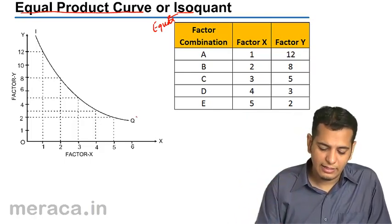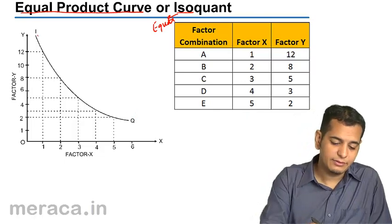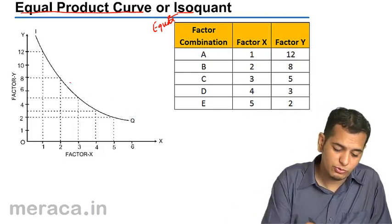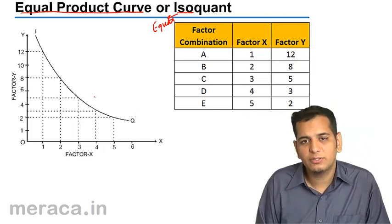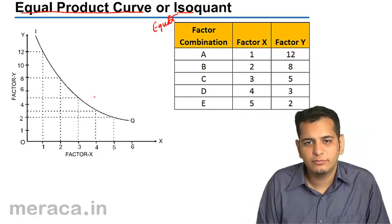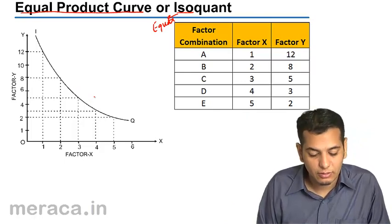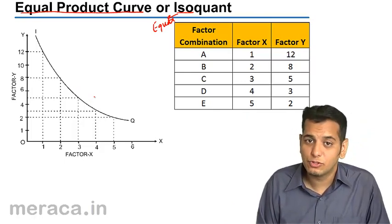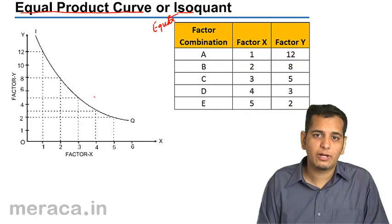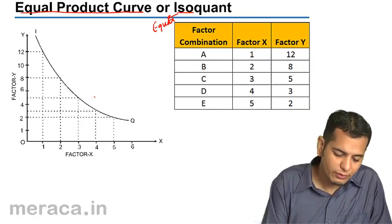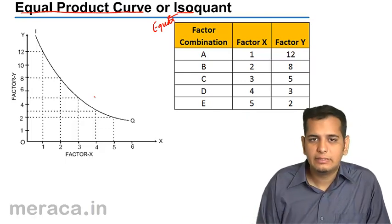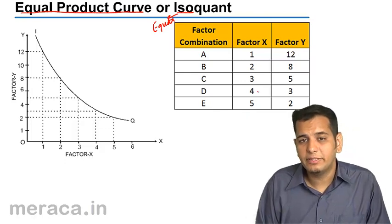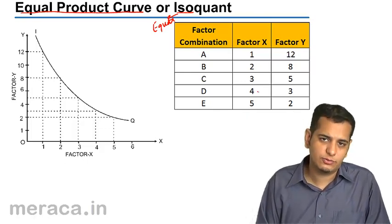As mentioned, the isoquant curve is similar to the indifference curve — the shape is also similar. It is downward sloping, sloping from left to right. But before going to the curve, let's first understand the different combinations of factors of production.